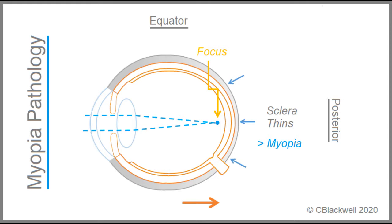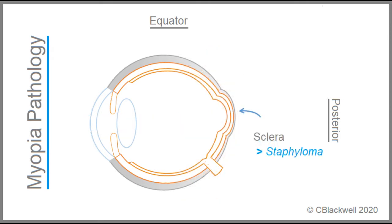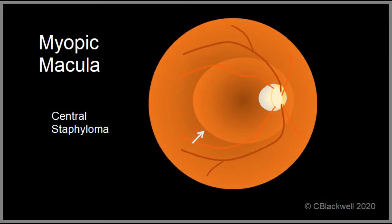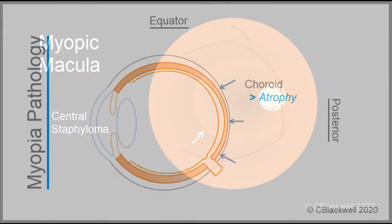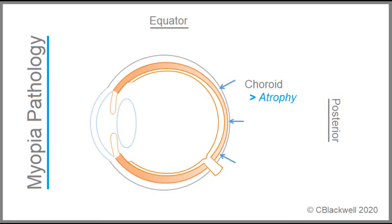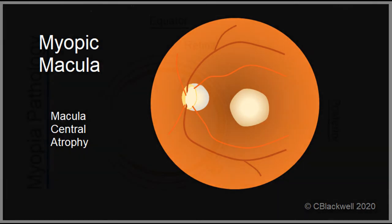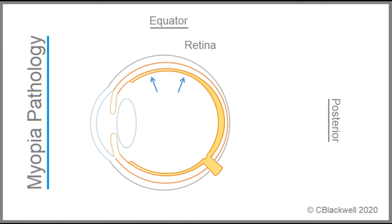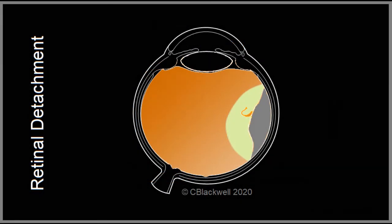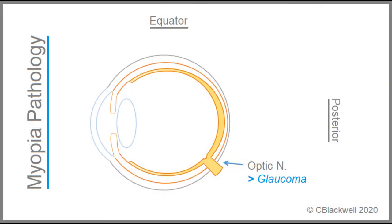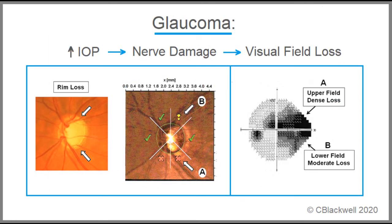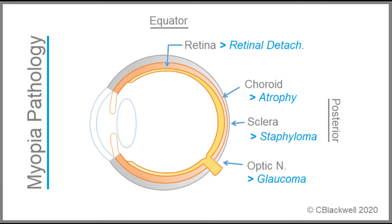First, the elongated eyeball results in refractive myopia. Second, the thinned, weakened sclera is also vulnerable to local bulging called a staphyloma. Likewise, the choroid becomes thinner toward the back of the eye, associated with atrophy — part of myopic macular degeneration, represented by a pale area in the central retina. The retina has normal thickness in the back of the eye but is thin at the equator; this peripheral thinning increases the chance of retinal tear and detachment. Lastly, changes in the optic nerve increase the chance of glaucoma — pressure-related damage to the optic nerve causing visual field loss.